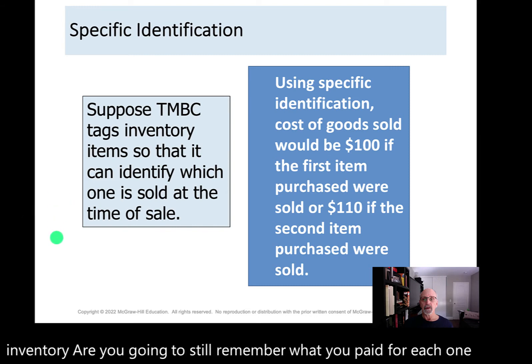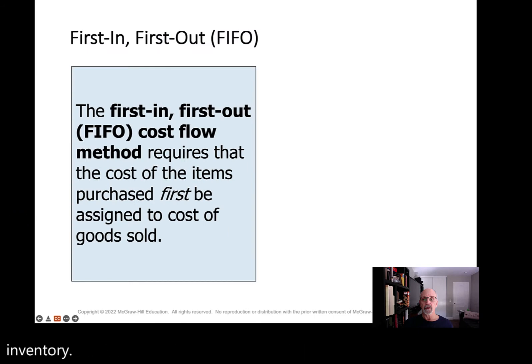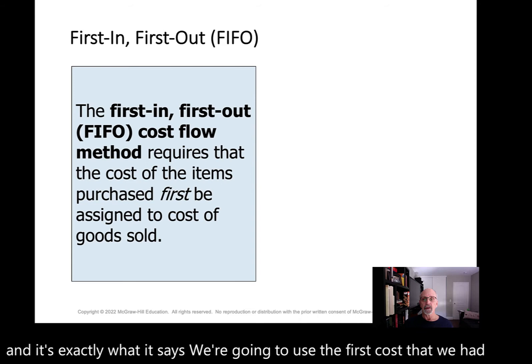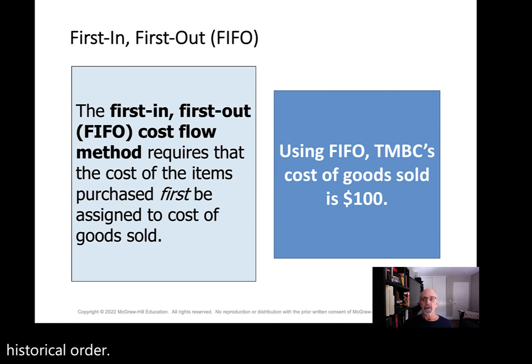The first of those methods is called first in, first out, and it's exactly what it says. We're going to use the first cost that we had first for cost of goods sold, and we'll go through the inventory in historical order. So for our TMBC example, COGS for the first item will be $100 — it's the first cost we had.